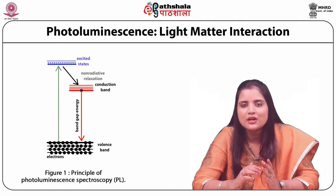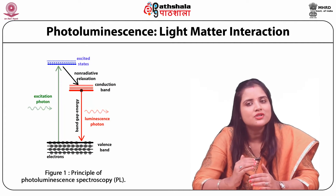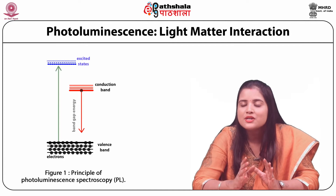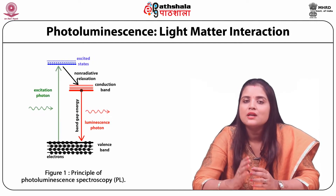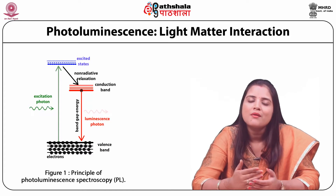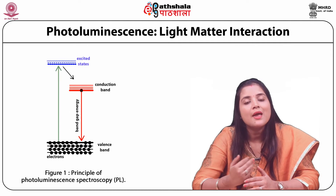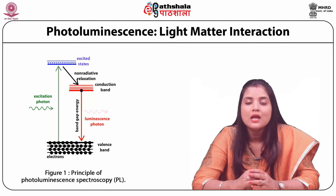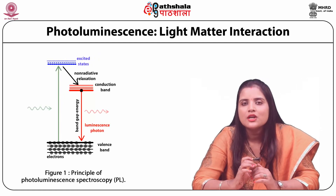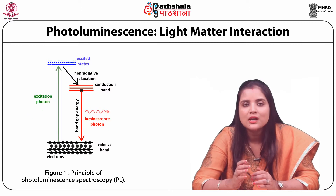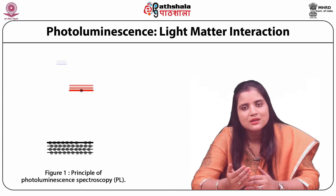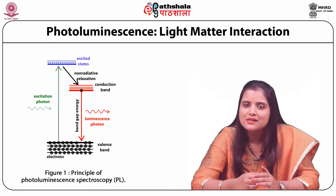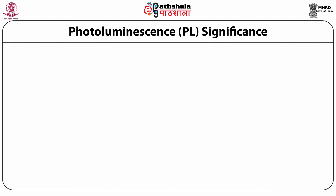These excited electrons return to the stable equilibrium or ground state by dissipating the extra energy in the form of either light, which is known as a radiative process, or by any non-radiative process. The emitted light energy which is photoluminescence is linked with the energy difference of the two electronic states taking part in the transition between excited and equilibrium states, whereas the portion of radiative process decides the quantity of light emitted.